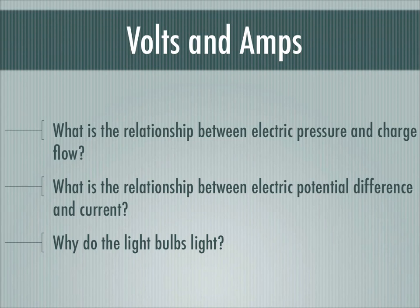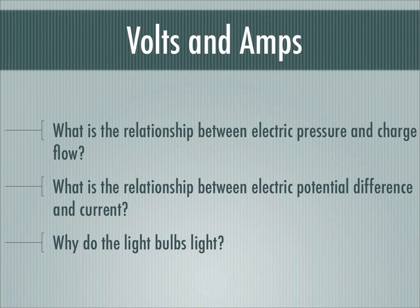We finish with a really important question: why do the light bulbs light? A light bulb lights when charges flow through it. Now we know what causes charges to flow in a circuit — charges flow in response to differences in pressure between two places in a circuit. So if on a light bulb there is a difference in pressure between its two sides, that pressure difference will drive charges through the light bulb. What causes light bulbs to light are differences in pressure across the light bulb.